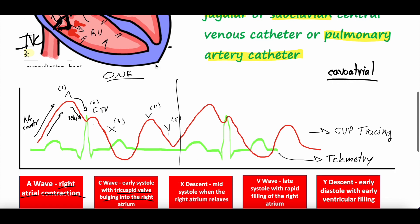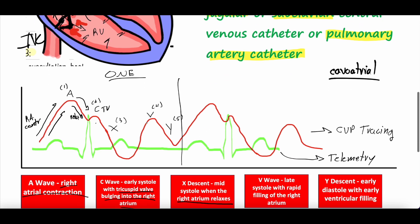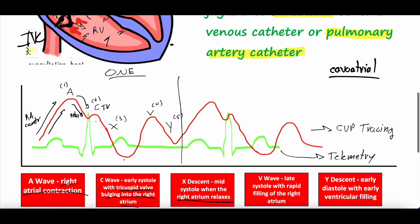After the C wave, the pressure continues to descend — this is the X descent, which represents mid-systole when the right atrium continues to relax. After the tricuspid valve closed and blood was pumped into the right ventricle, the tricuspid valve bulged upward as the right ventricle contracted, while the right atrium expanded outward and relaxed. Since the CVP measurement is right at this junction, as the right atria relaxes you get this downslope — the X descent is right atrial relaxation.